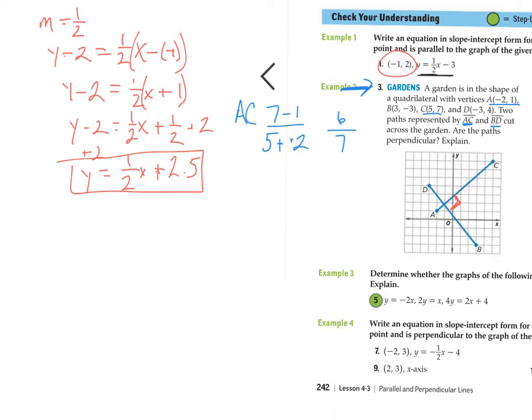So opposite reciprocal of six sevenths, if we think about what that would be, that would be seven sixths and then negative seven sixths. So that's what we're looking for as a slope out of BD. Let's see if that's what truly happens. So B right here, D is right here. So this is going to be four minus negative three. And then we're going to do negative three minus three. So this will turn into plus, plus if we can write, seven, negative three.